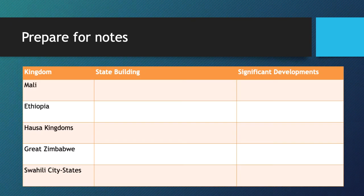What you want to do now is pause and create this graphic organizer on a piece of notebook paper. This is where you're going to be taking notes for today. Now we're going to focus on the kingdoms, starting with West Africa and Trans-Sahara Trade.